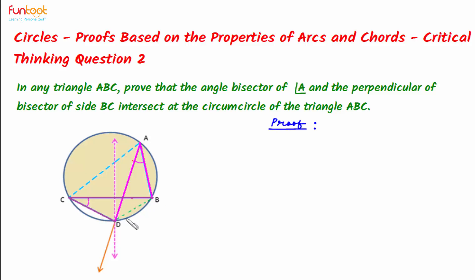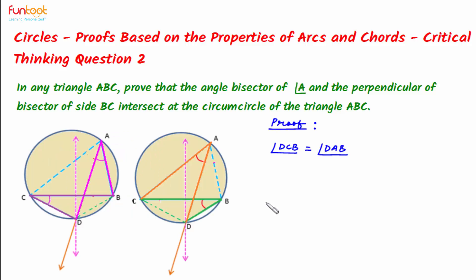For proving BDC as an isosceles triangle, we can see that angle DCB is equal to angle DAC, as angles in the same segment are equal. Similarly, making use of the same property — angles in the same segment are equal — angle DBC will be equal to angle DAC.